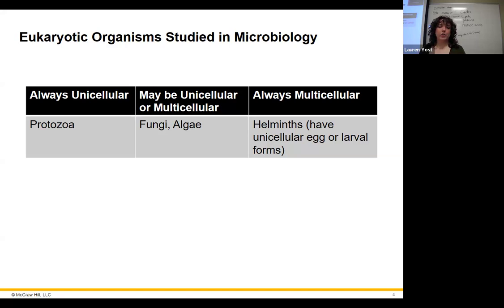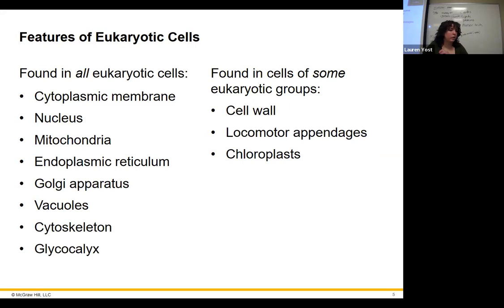The always-unicellular group is protozoa — things like malaria and giardia. Then we have fungi and algae, which may be unicellular or multicellular. Algae don't really associate much with disease — you have red tides, but those algae are producing toxins rather than directly causing disease. Fungi can cause disease — ringworm, athlete's foot, cradle cap — those are obvious examples.